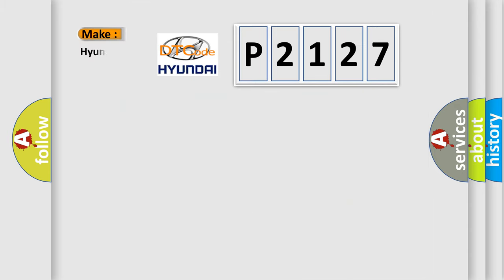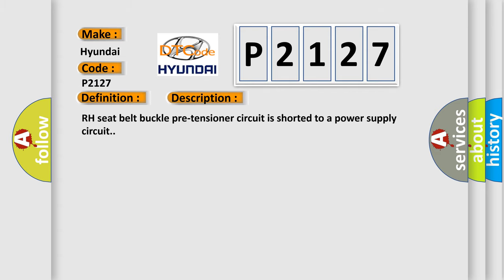The number itself does not make sense to us if we cannot assign information about what it actually expresses. So, what does the diagnostic trouble code P2127 interpret specifically for Hyundai car manufacturers? The basic definition is RF seat belt pre-tensioner circuit short. And now this is a short description of this DTC code. RH seat belt buckle pre-tensioner circuit is shorted to a power supply circuit.